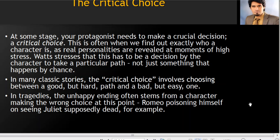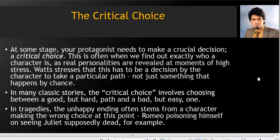Then the critical choice. At some stage your protagonist needs to make a crucial decision — that's called the critical choice. This is often when we find out exactly who a character is, as real personalities are revealed at moments of high stress. Nigel Watts stresses that this has to be a decision taken by the character to take a particular path, not just something that happens by chance. The critical choice must be intentional — it shouldn't be a random choice. The mind of the protagonist must work if you want to establish the strength of your character, presenting them as a decision-maker.